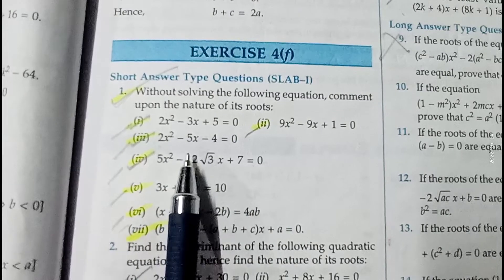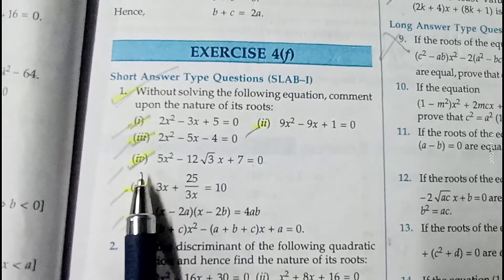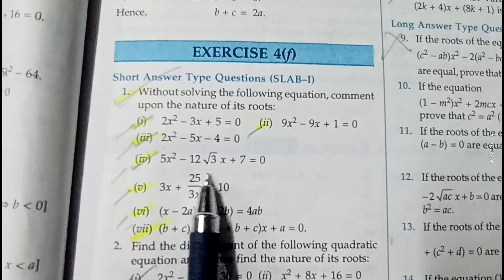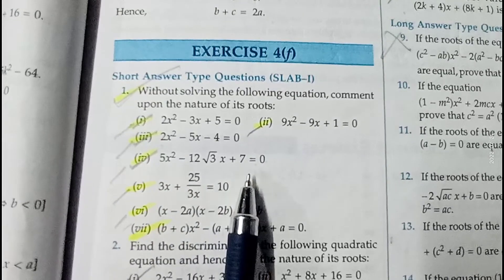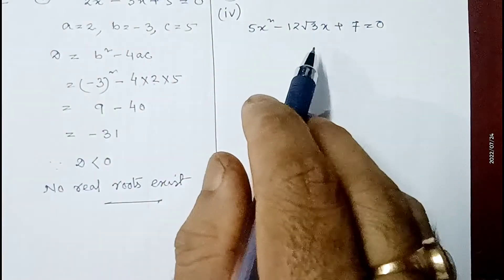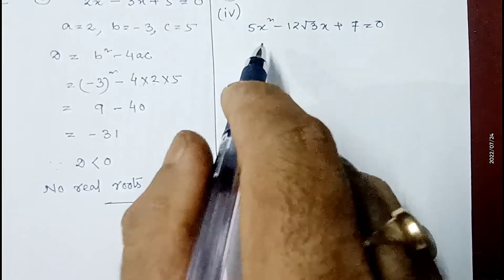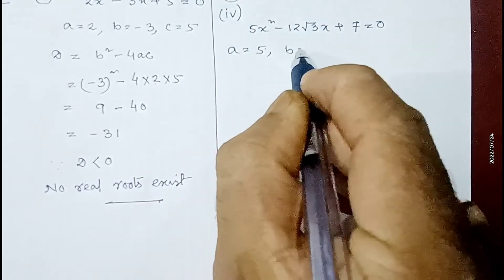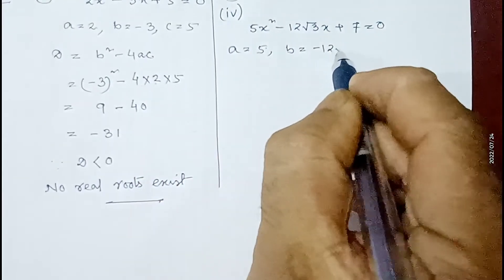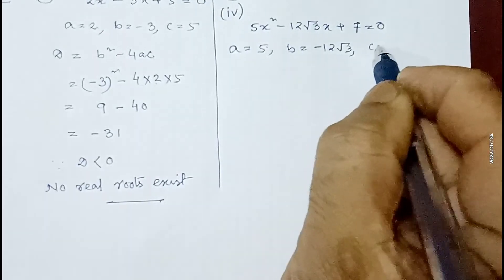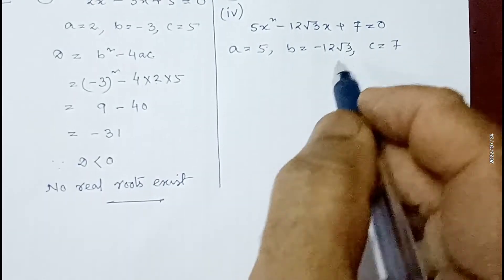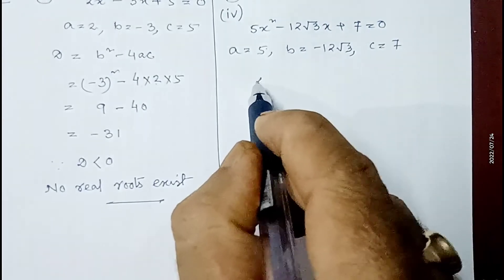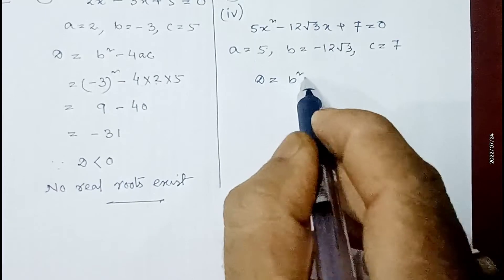The second and third parts of question number one are of the same type — you can do those yourself. Let me show the fourth part. The equation is 5x² - 12√3·x + 7 = 0. Comparing with ax² + bx + c = 0, a = 5, b = -12√3, and c = 7. We need to find the discriminant to comment on the nature of the roots, so D = b² - 4ac.